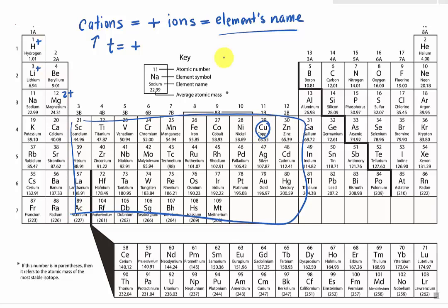For instance, copper can have Cu 1 plus charge or Cu 2 plus. So how do we name copper? We cannot just use the name copper and ignore the charges because the charge is extremely important.